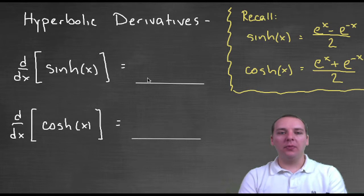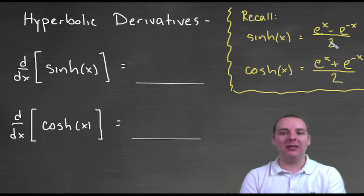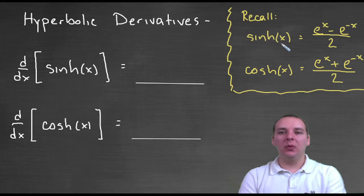Now, before I just tell you what they are, let's think about this for a minute here. If you recall, hyperbolic sine was defined in terms of exponential functions, e to the x and e to the minus x, technically it was e to the x minus e to the negative x divided by two. That was how hyperbolic sine was defined.